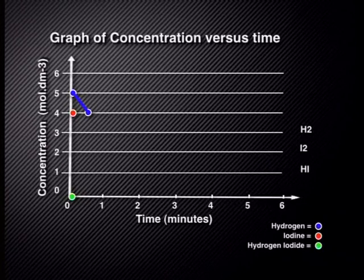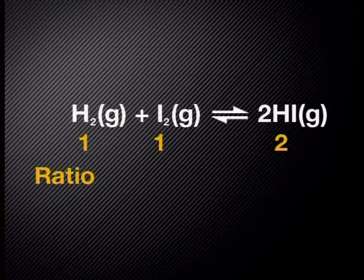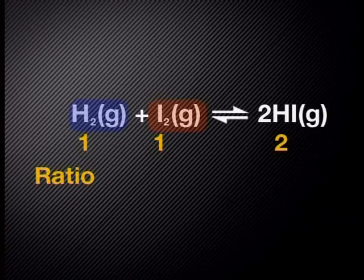At the same time, the iodine decreases by one mole per decimeter cubed from four to three moles per decimeter cubed. Both reactants decrease by one mole per decimeter cubed, because the ratio between hydrogen and iodine is one to one.